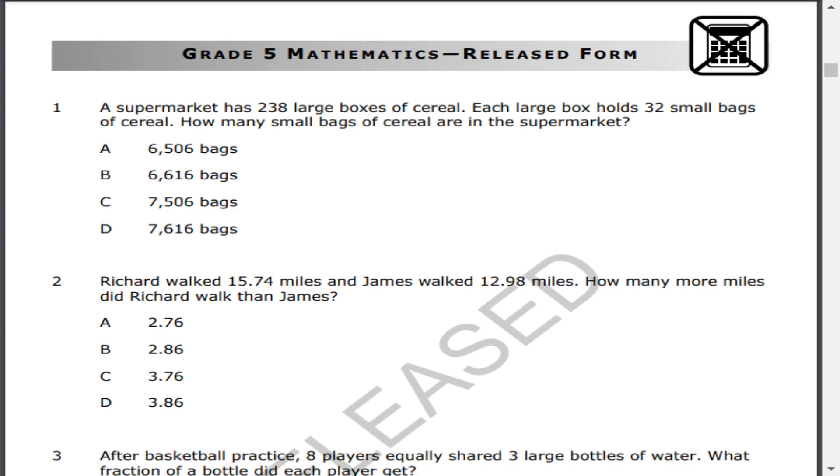Number one. A supermarket has 238 large boxes of cereal. Each large box holds 32 small bags of cereal. How many small bags of cereal are in the supermarket?